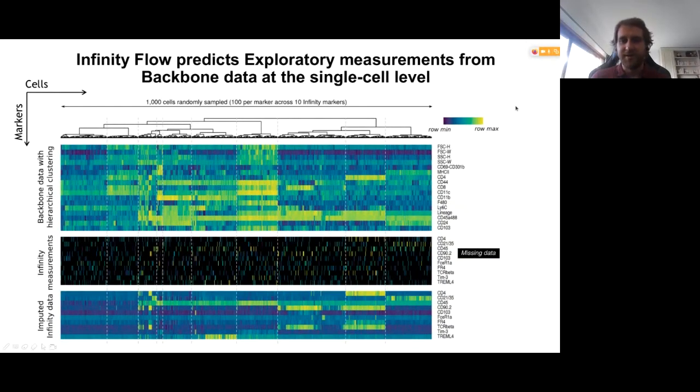That's a bit abstract, maybe. So let's look at an example. This is a very tiny portion of the dataset I'm going to tell you more about later, but here we are only looking at 1000 cells and only 10 exploratory markers. So the top part is actually the backbone panel here. I've just run some simple hierarchical clustering to reveal cell populations there. What's interesting is if you look at the second row of markers, these are the first 10 exploratory measurements. As I said, they are very sparse, represented here in black.